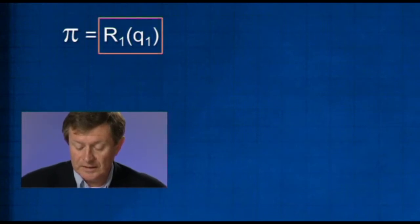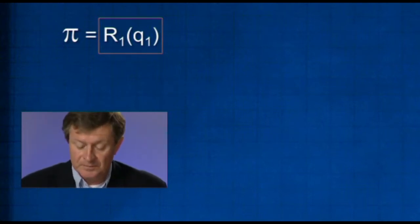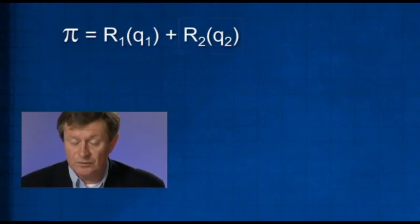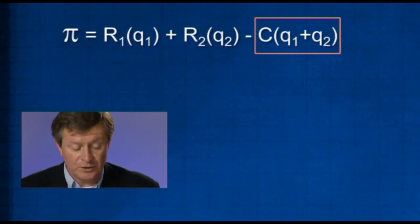Which depends on the quantity sold in that first market, plus the revenue from the second market, R2, which depends on the quantity sold in that market. So Q1 and Q2 represent these two quantities. Minus the total cost, which is the cost of the total output, Q1 plus Q2.